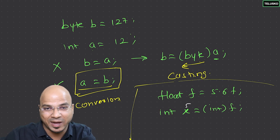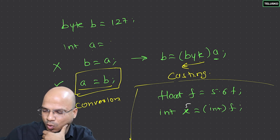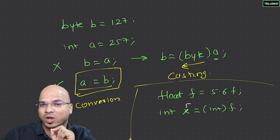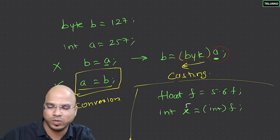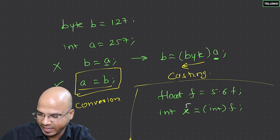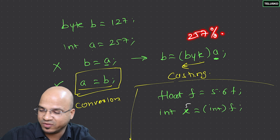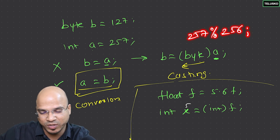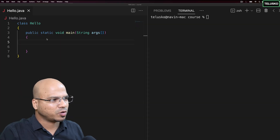Coming back to byte — what happens when you have a bigger number like 257? The byte range ends at 127 so you can't go beyond that. Java uses the modulus concept: it divides the number by the full byte range, which is 256 (from -128 to +127), and stores the remainder. So 257 % 256 = 1, meaning when you cast 257 to byte you get 1. I'll demonstrate this in code.